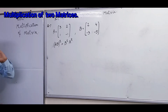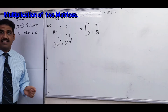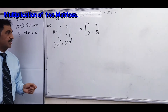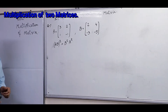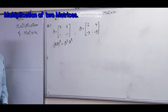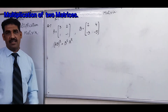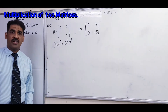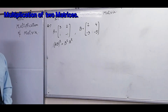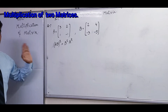This is question number seven, which is from our reduced syllabus. In this question statement, we have to prove that (AB) transpose is equal to B transpose multiplied by A transpose. The operation of transpose you have already learned.